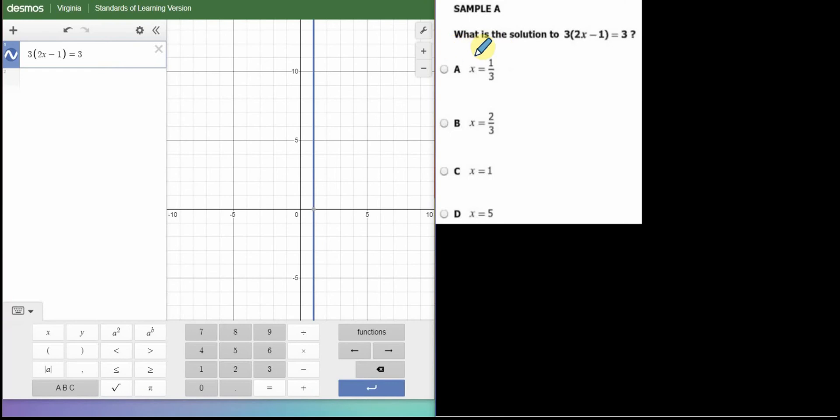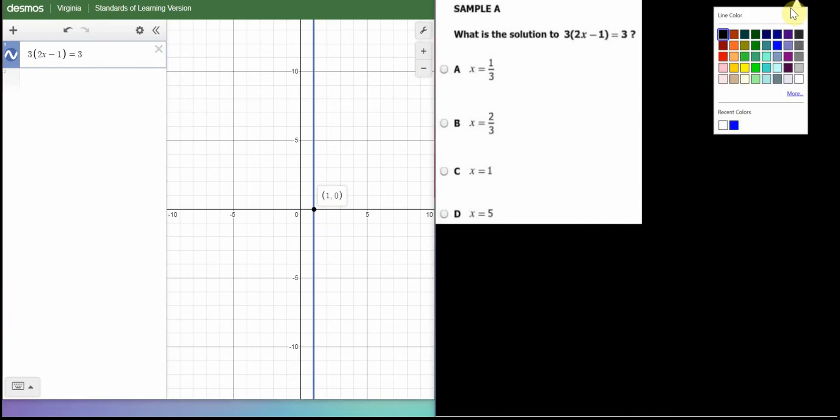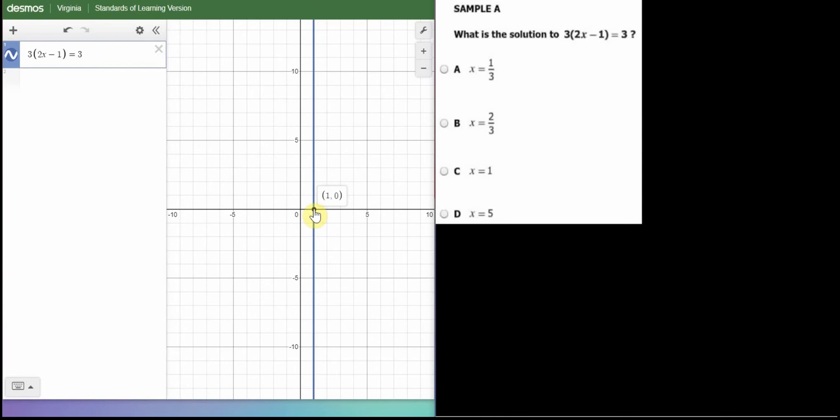Alright, so first one, what is a solution to, and they give you an equation and look for an answer. So, using Desmos, I type in the equation, right? 3, 2x minus 1 equals 3, and I look to see it then graphs a vertical line. I care about where it hits, and it looks like it hit the x-axis at 1, so x equals 1.